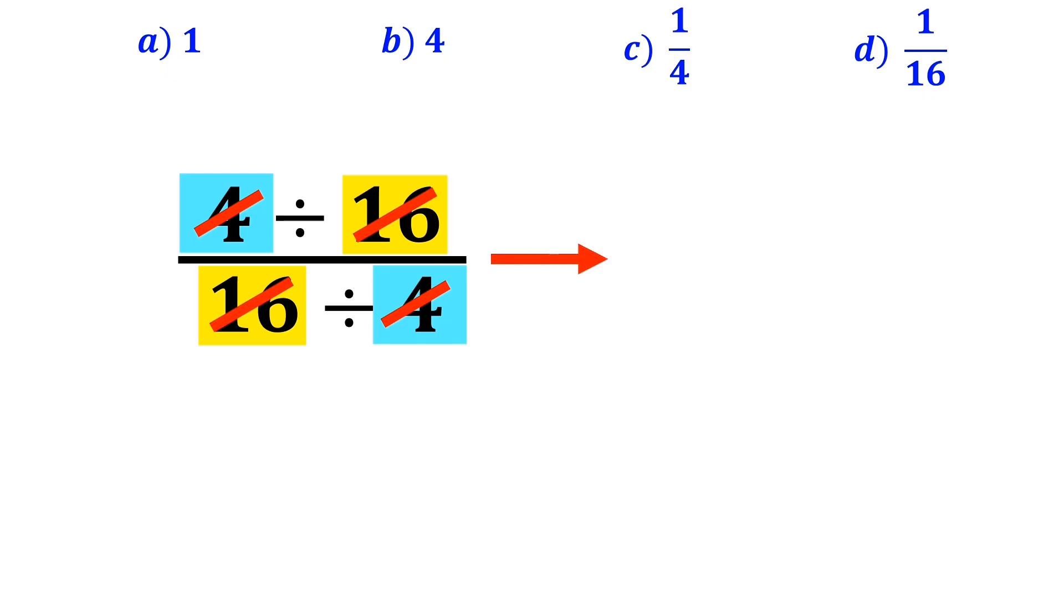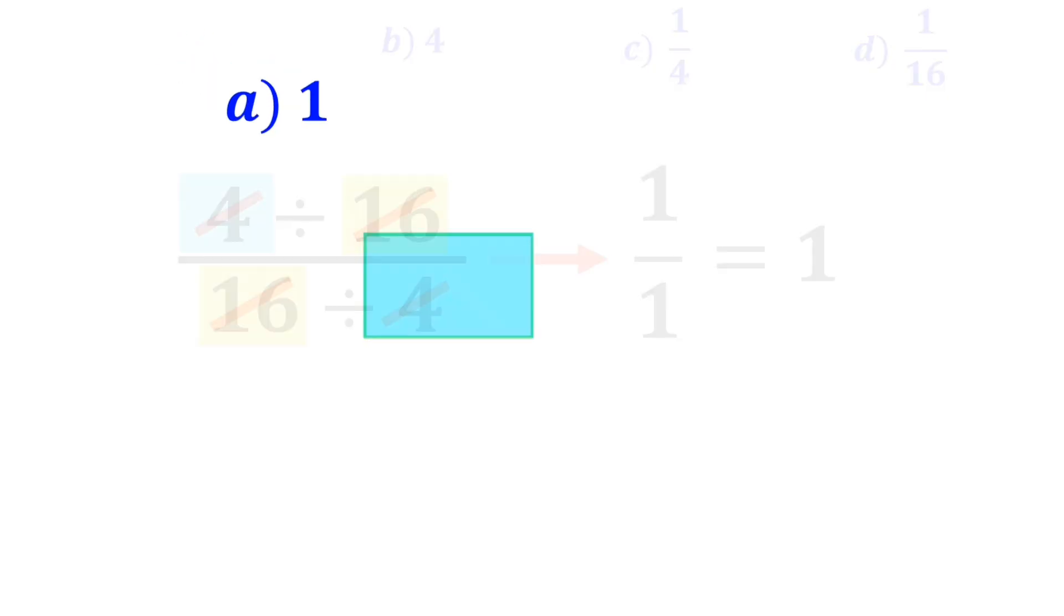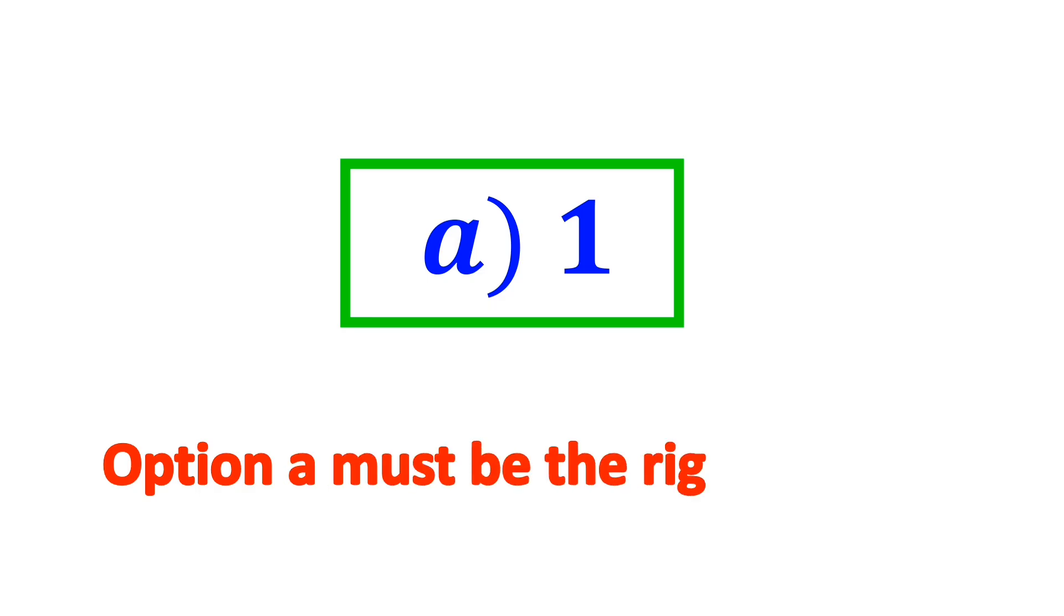Eventually, they reduce the whole expression to 1 divided by 1, which equals 1. And without thinking twice, they quickly say that option A must be the right answer. But that's actually incorrect.